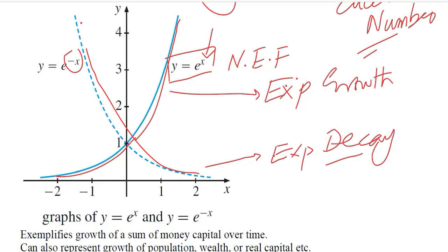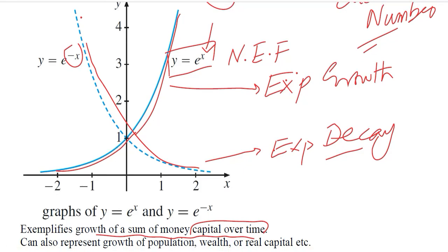And it is a common phenomenon which is used in economics and other social sciences, as well as in pure sciences. Because we can use it to graph the sum of money that grows over time in the form of capital. This is one of the possibilities that we might see, as well as it can also represent the growth of population. And it can also represent the growth of wealth or real capital. That is in physical terms, the capital in physical terms.